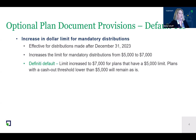Some of the optional provisions we're defaulting into: we're going to default yes on increasing the dollar limit for mandatory distributions, such as a cash-out. Currently the cash-out limit is $5,000. SECURE 2.0 allowed us to increase that to $7,000. So for those currently using the $5,000 limit, the default will be to increase it to $7,000. But if you're using something less than $5,000, such as $3,500, we will keep you at the lower amount unless you tell us otherwise.